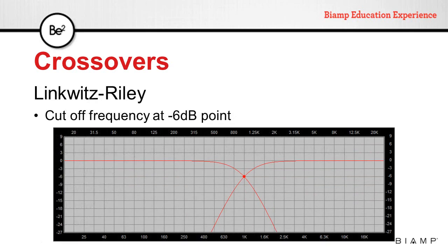In Linkwitz-Riley filters, the cutoff frequency is at the minus 6 dB point. So when we sum acoustically, those signals will get back to 0 dB.